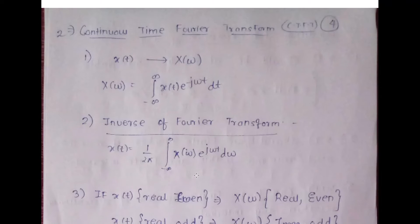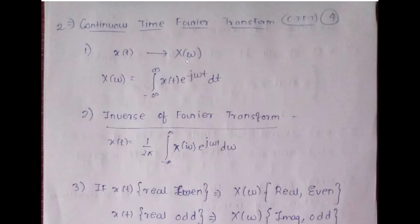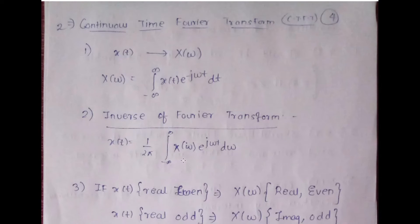Let us understand the key formulas. X(ω) — the CTFT of x(t) — is given as: X(ω) = integration from minus infinity to infinity of x(t) e raised to minus j omega t dt. The inverse Fourier transform gives back x(t) as: x(t) = (1/2π) integration from minus infinity to infinity of X(ω) e raised to j omega t d omega.